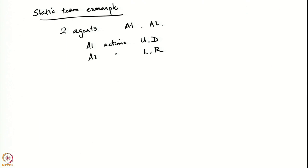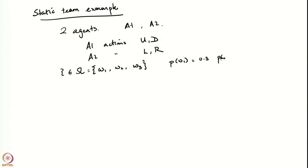The environmental noise, which comprises all the noise in the system, can take only three different states for simplicity. So psi belongs to a set capital omega, which itself comprises just three elements: omega 1, omega 2, and omega 3. These three possible values of psi occur with the following probabilities: probability of omega 1 is 0.3, probability of omega 2 is 0.3, and probability of omega 3 is 0.4.